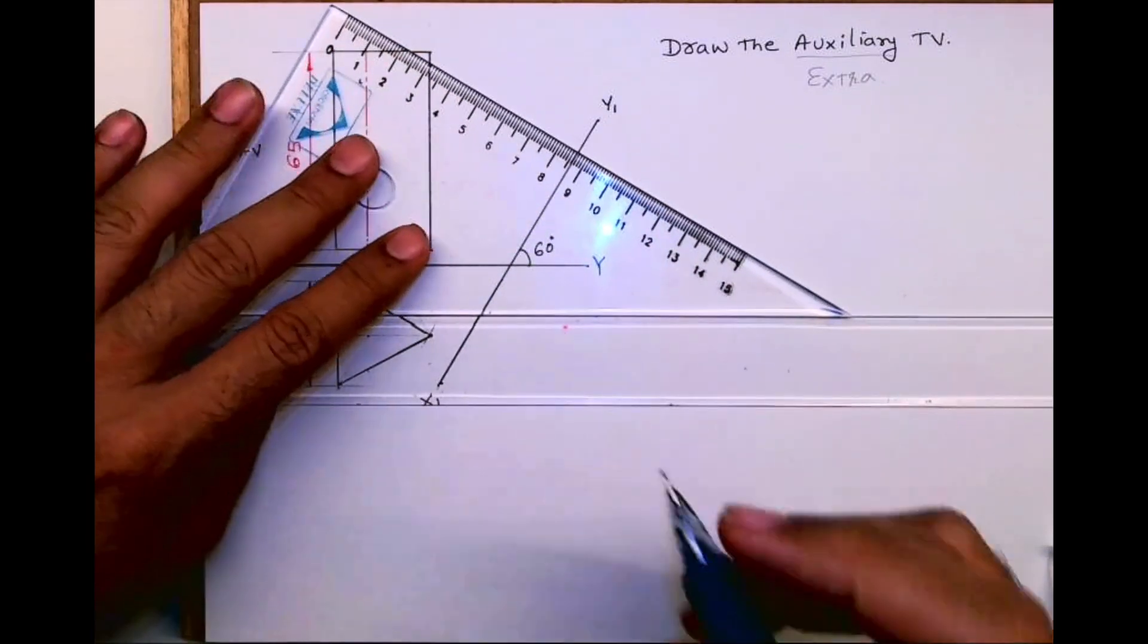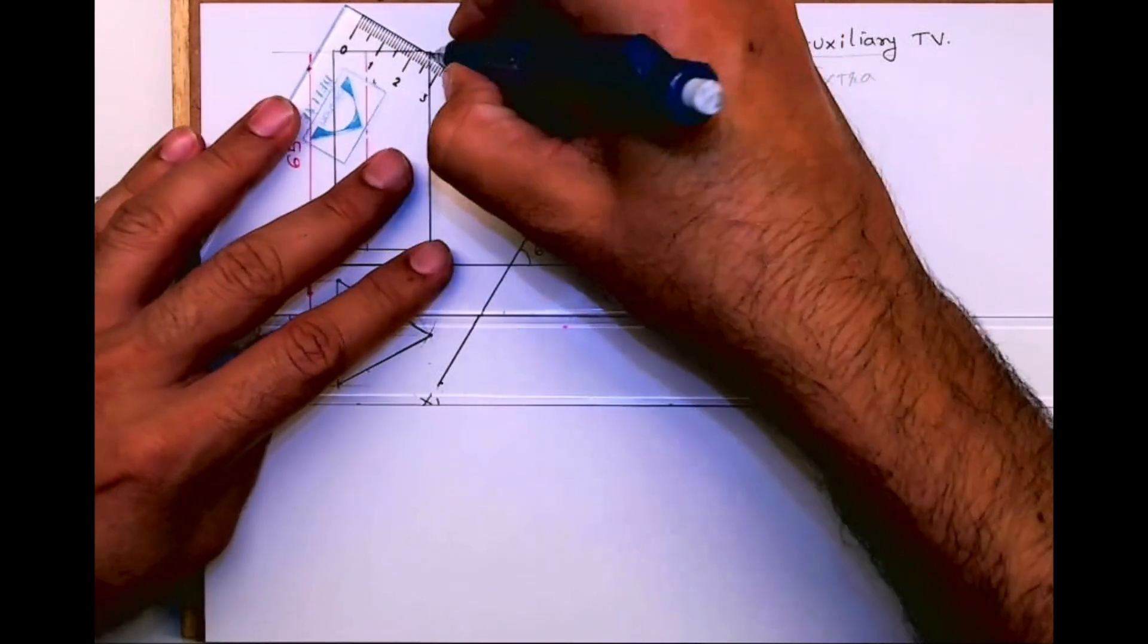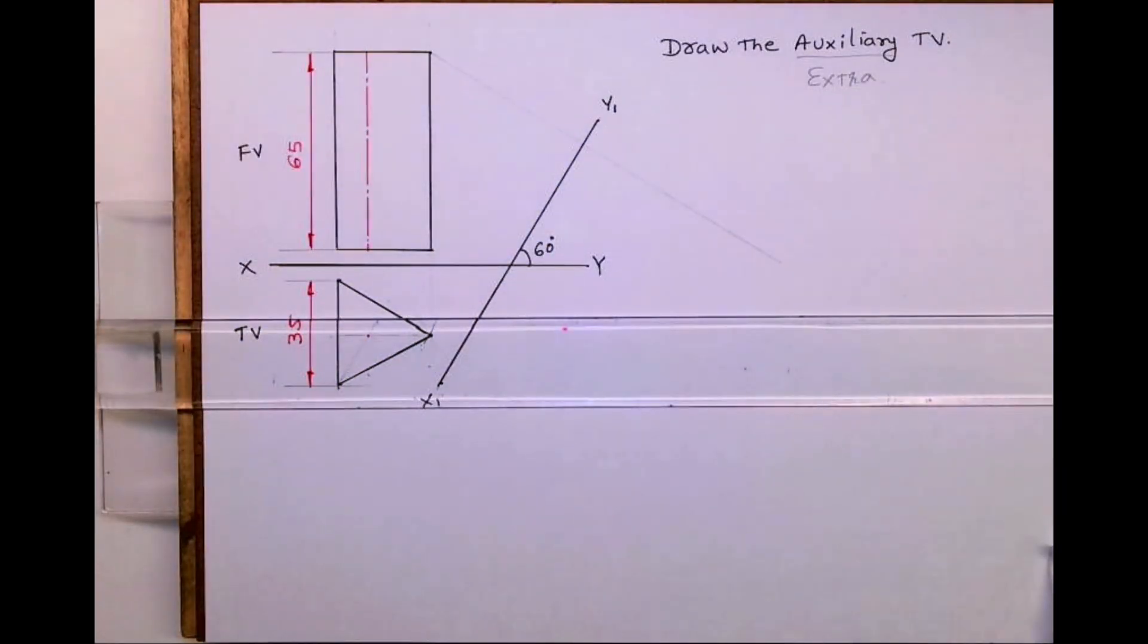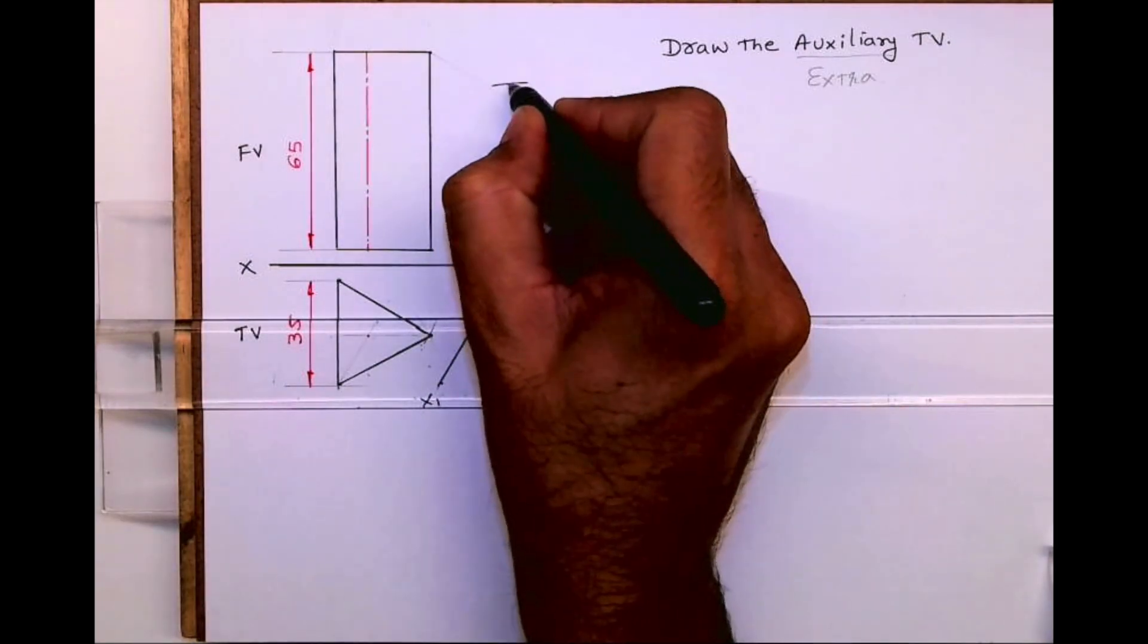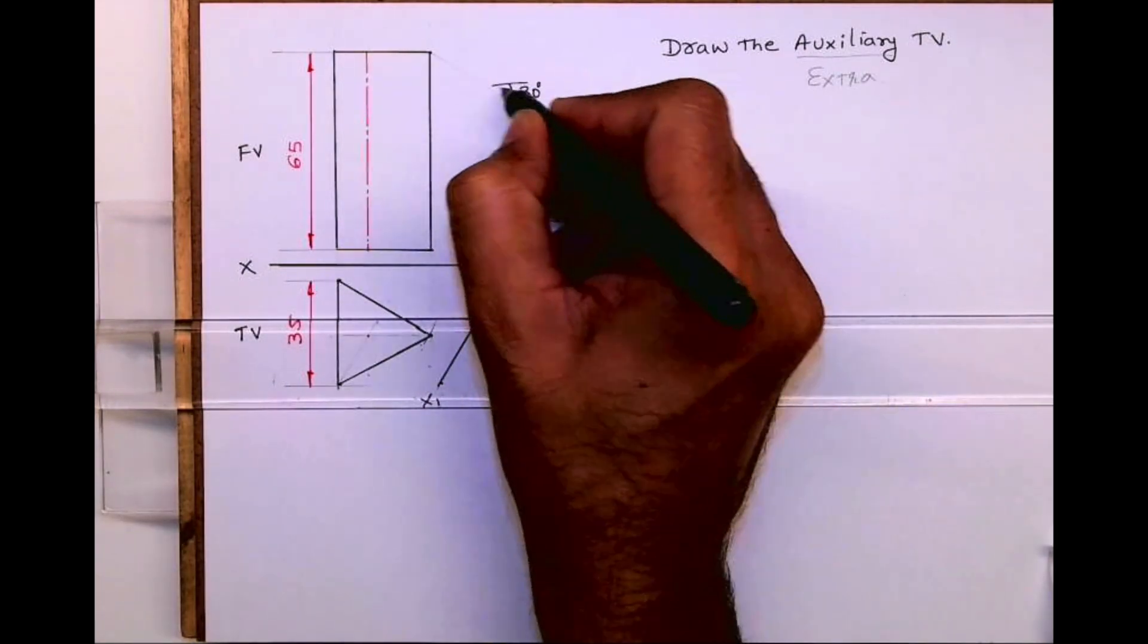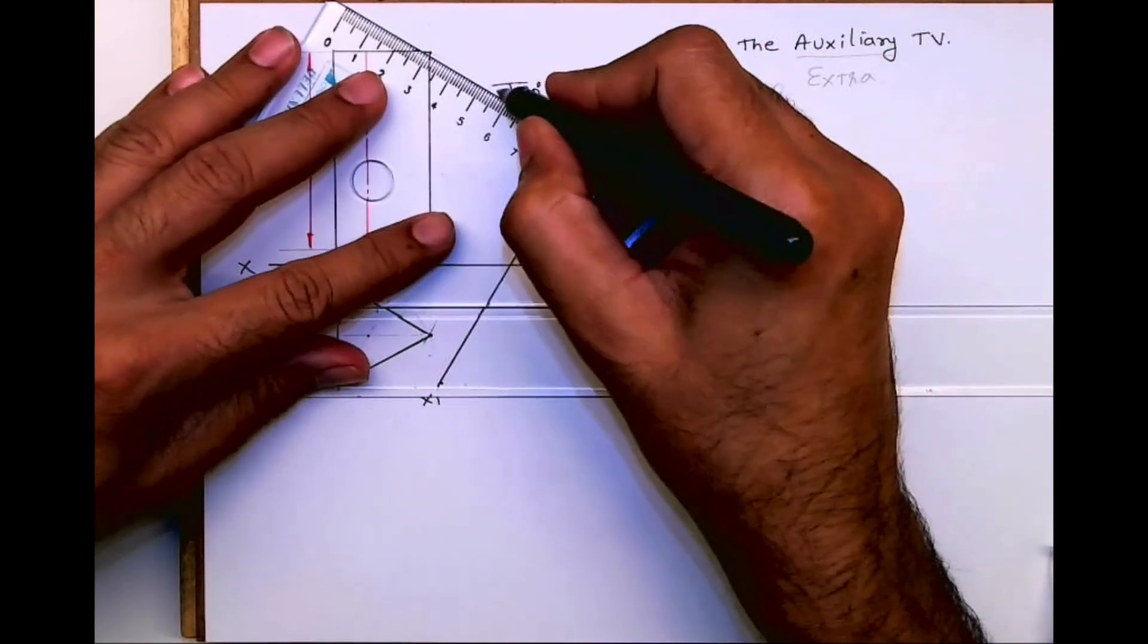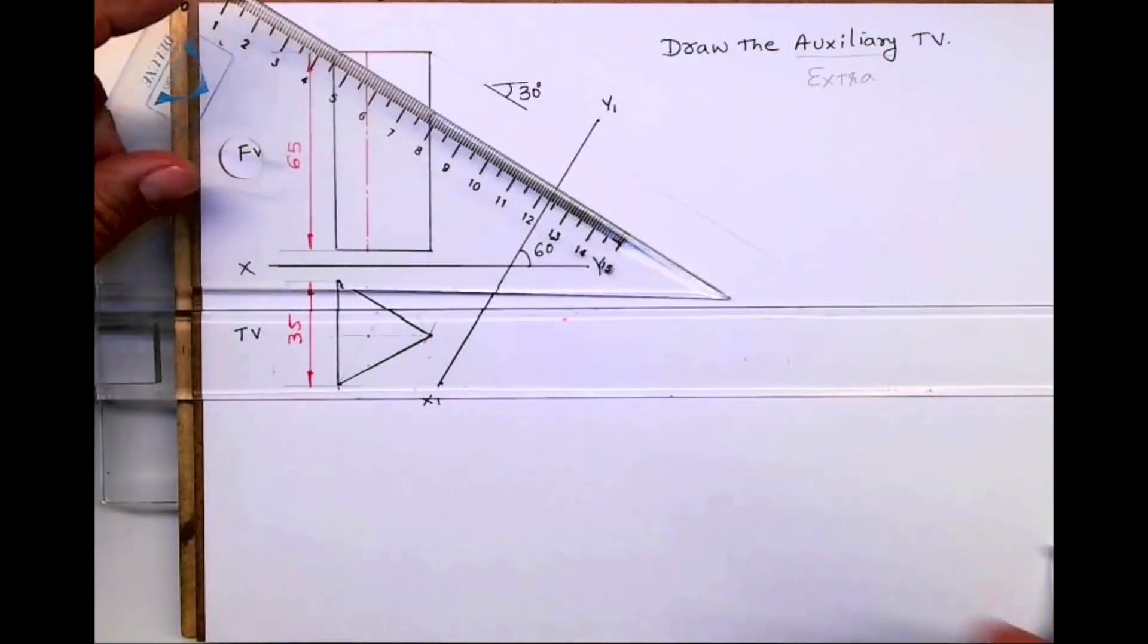This is 60 degrees and this projection I will draw at 30 degrees. It should always be 90 degrees. So it is given 60, so we will take 30. If it is 45, then we will take 45. See this way.